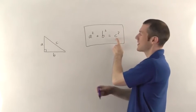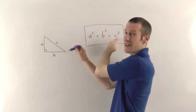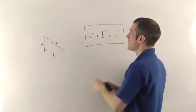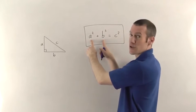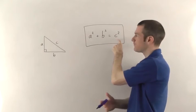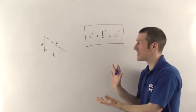It's very important that c, the thing that's by itself, is on the longest side of the triangle and the other two bits go on the shorter sides. So you add together the areas of the squares on the shorter sides and you always get the area of the square on the longest side. So that's what Pythagoras' theorem is.